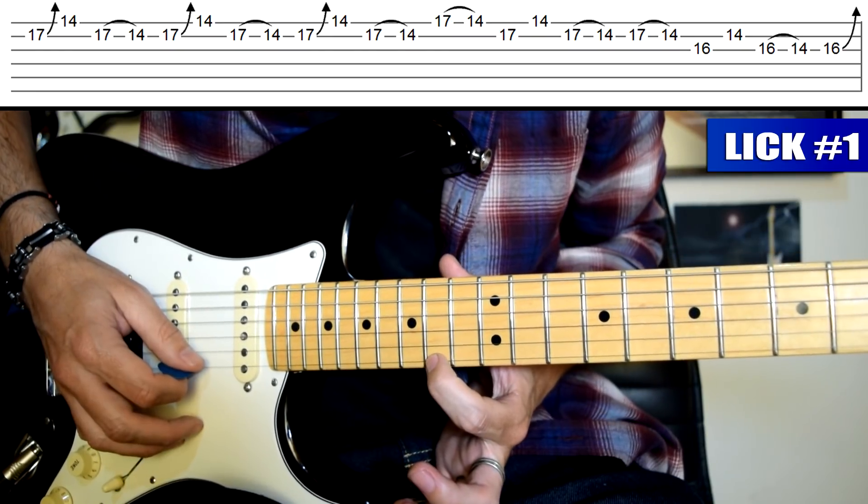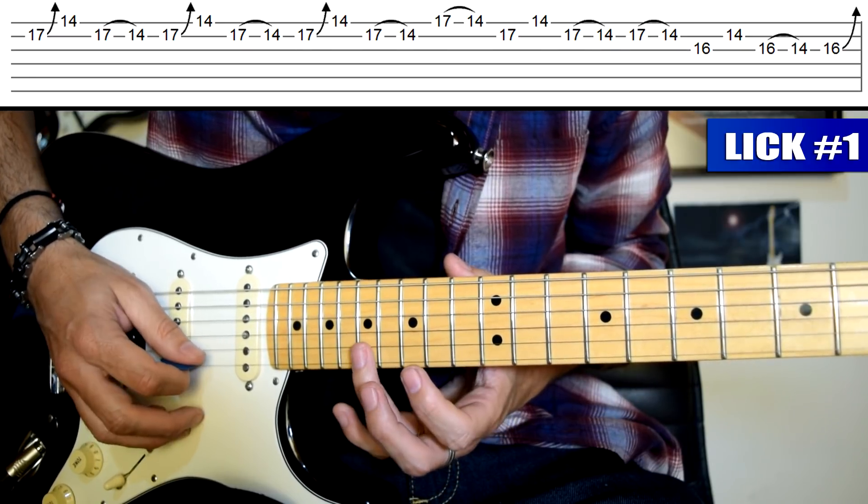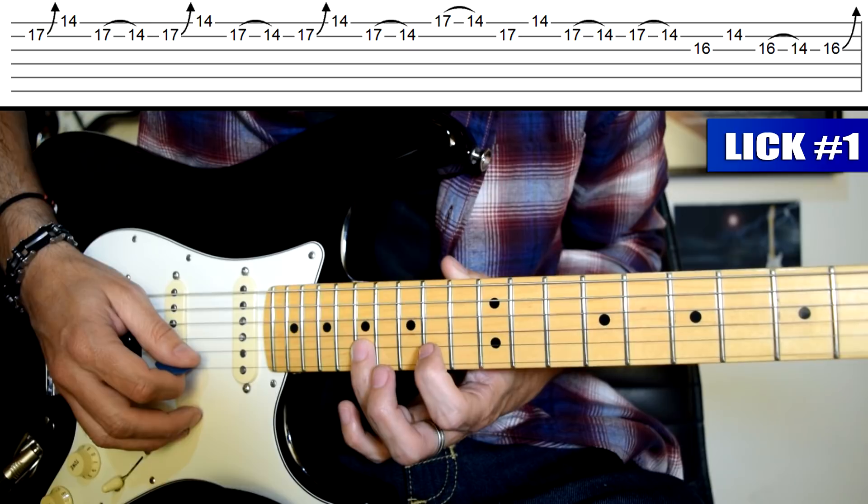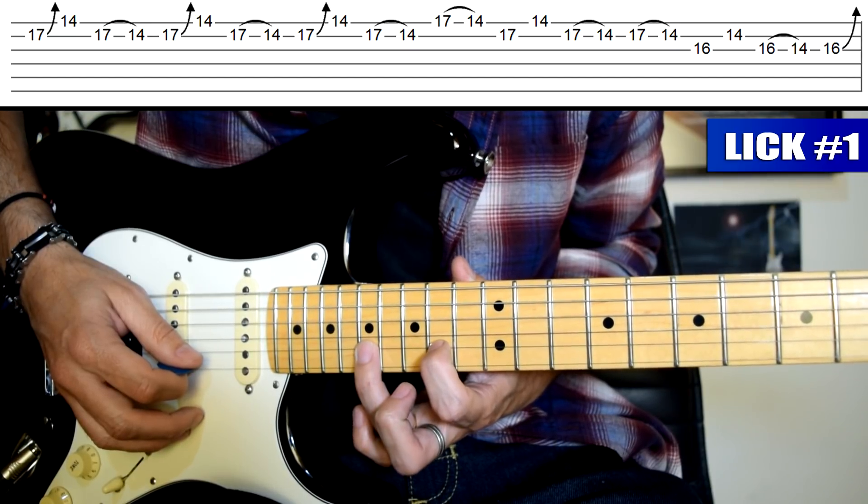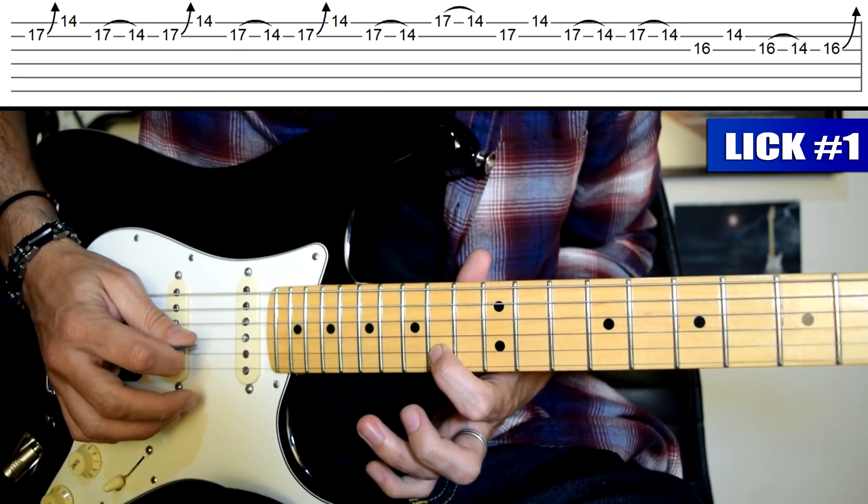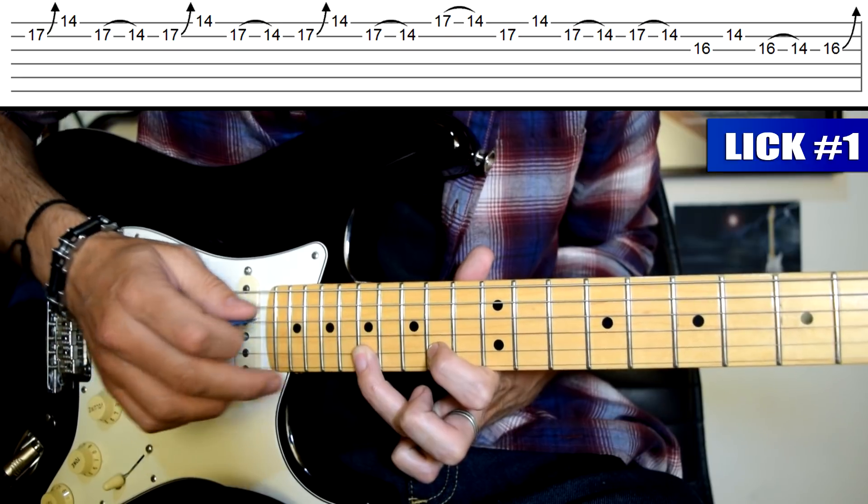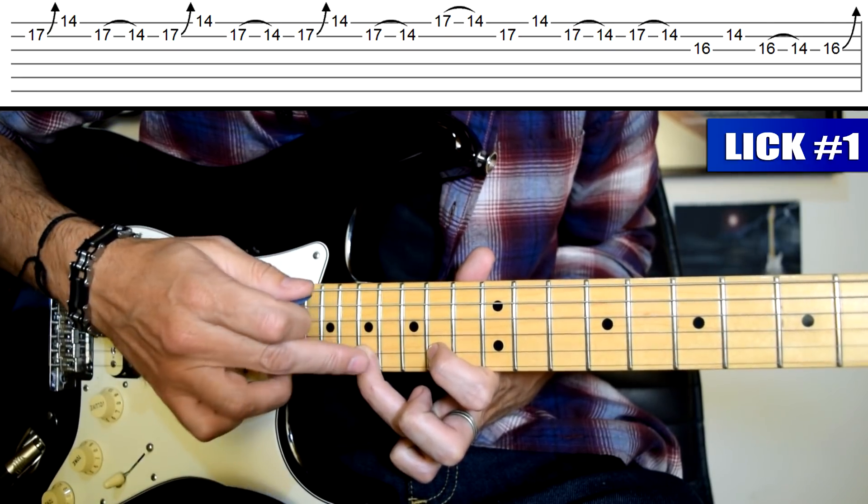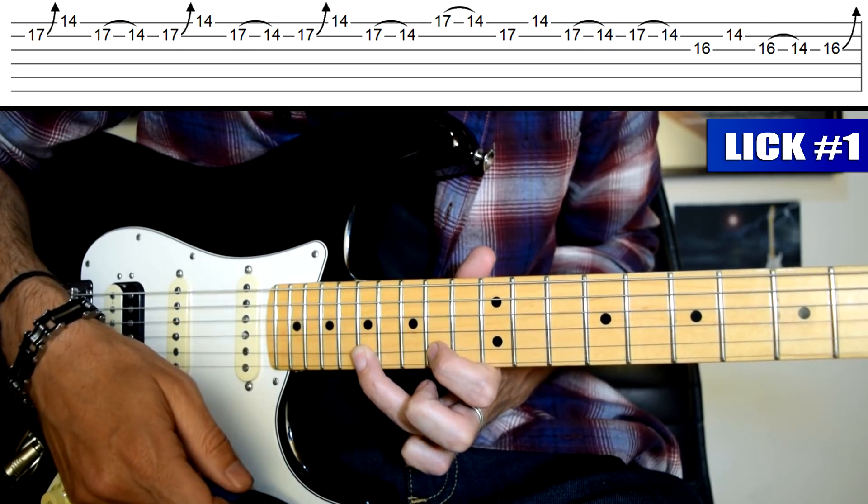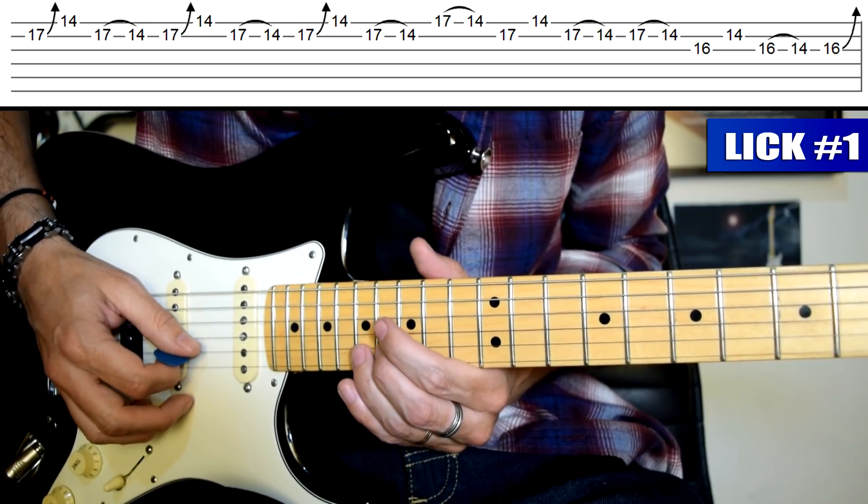Luego, dedo 1 traste 2 de cuerda 1, púa abajo en cuerda 1. Dedo 3 traste 17 de cuerda 2 y dedo 1 a la vez en traste 14 de cuerda 2, púa arriba en cuerda 2. Y hago un ligado descendente pellizcando la cuerda 2 y levantando el dedo 3. De esta manera tengo el ligado descendente.